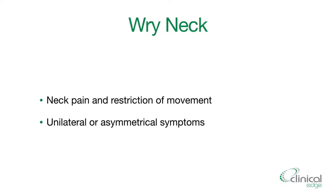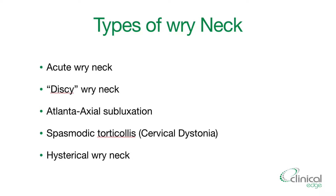Today we're going to focus on the discogenic wry neck. The features of a wry neck are neck pain and restriction of movement, plus unilateral or asymmetrical symptoms. The different types include acute wry neck, discogenic wry neck — which is what we're focusing on — atlantoaxial subluxation, spasmodic torticollis, and hysterical wry neck.